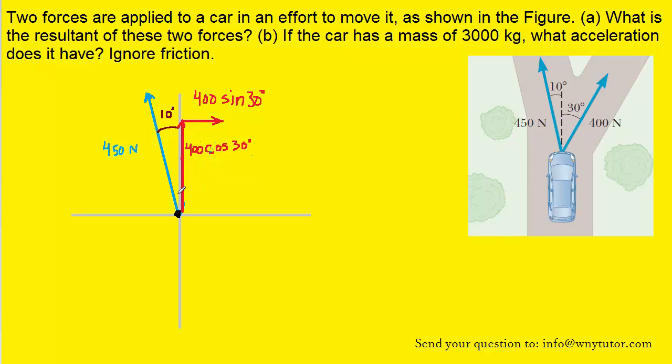We can find the y and x components for the 450 newton force in a similar manner. The x component being 450 sine of 10 and the y component being 450 cosine of 10. After we have the components of the 450 newton force, we can erase the 450 newton force and leave behind just its components. Now that the forces are broken up into their components, we can move on to finding the resultant of the forces.